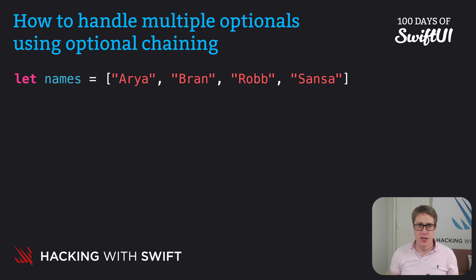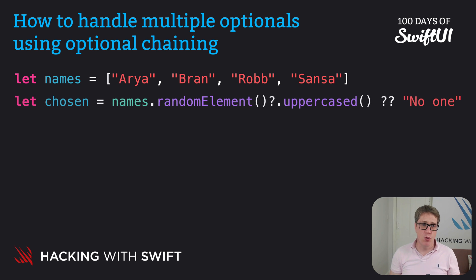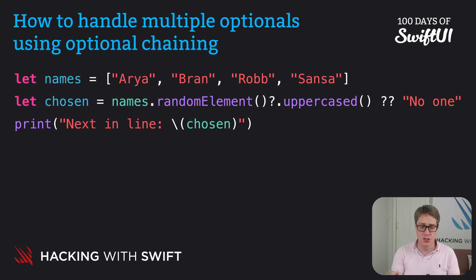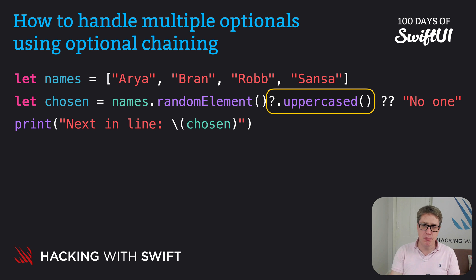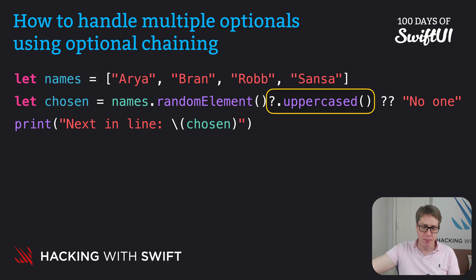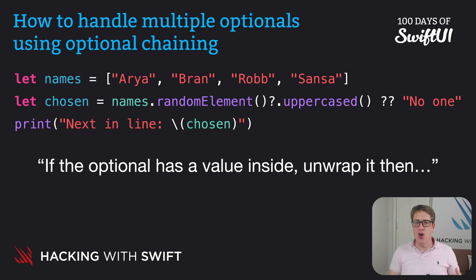Here we have an array of names — Aya, Bran, Rob, and Sansa. We'll then say: let chosen equals names dot randomElement question mark dot uppercased, nil coalescing "no one". And finally print out "the next in line is chosen". This uses two optional features at once. You've already seen how helpful nil coalescing is for providing a default value if an optional is currently nil. But that question mark dot uppercased — that shows off optional chaining: the ability to say, if the optional has a value, run some new code on that value. So what it's saying here is: if the optional has a value inside, unwrap it and then carry on — in our case, uppercase it.